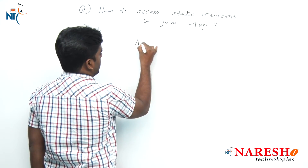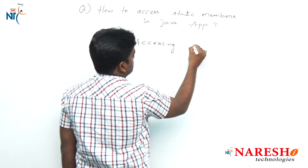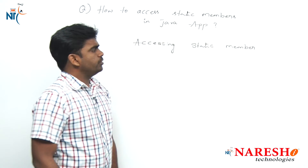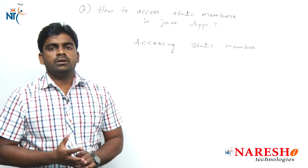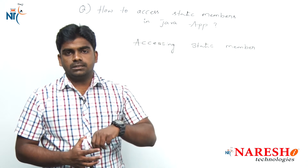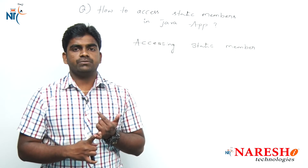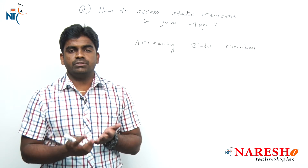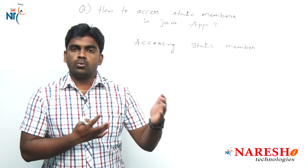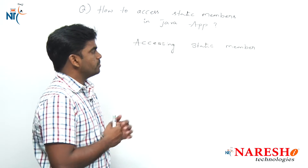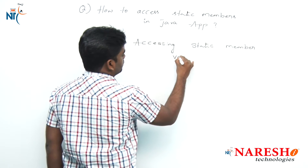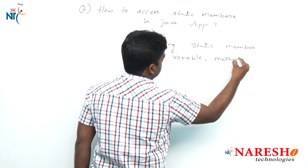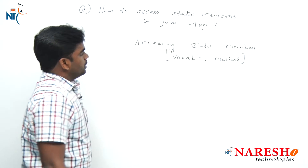When accessing a static member, we are talking about static variables or static methods. Generally, only variables and methods can be accessed externally. Blocks — static blocks or non-static blocks — cannot be accessed because they have no identity. So, accessing a static member means it may be a static variable or a static method.